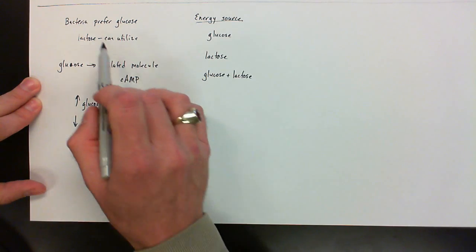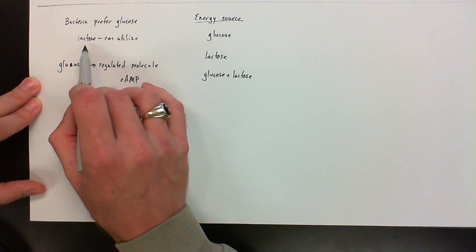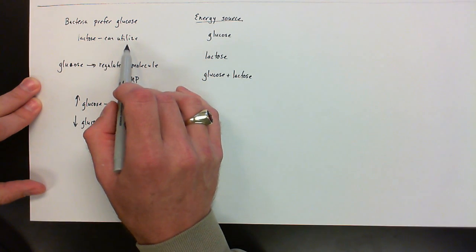All right, so that's a little bit of background here. So once again, bacteria will prefer glucose. They can, however, utilize lactose as an energy source.